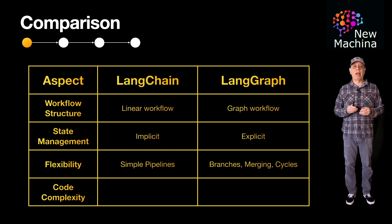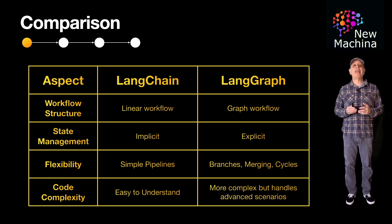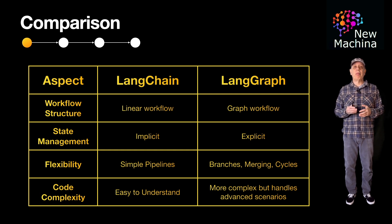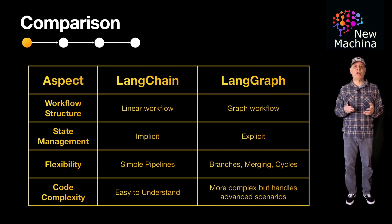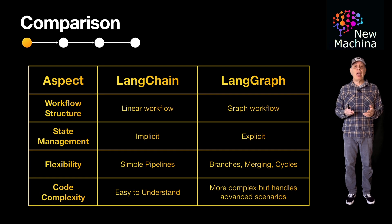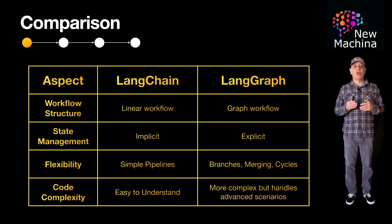The last aspect is code complexity. LangChain is fairly easy to understand, and you can get up to speed fairly quickly. It's normally used to implement simpler workflows, which also contributes to making it easier to implement a solution with LangChain. LangGraph, on the other hand, is a bit more complicated and takes more time to get up to speed. LangGraph is normally used to implement complex workflows, so this also contributes to making it harder to use when implementing solutions.